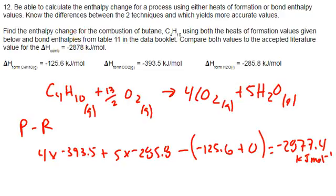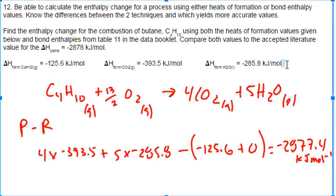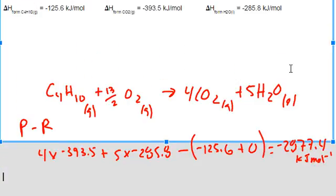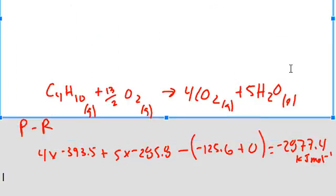When I do bond enthalpies, the story is going to be a little different. Let me see if I can find some room here for bond enthalpies. And I'll squeeze bond enthalpies on top because of the way this scrolls, but that's okay. So with my bond enthalpies, I'm using the same equation, but now I have to draw what this looks like.